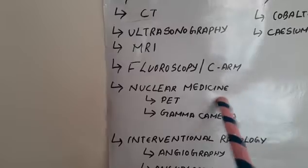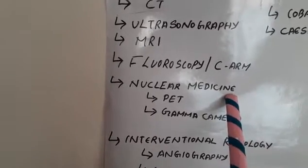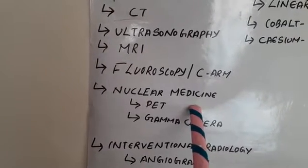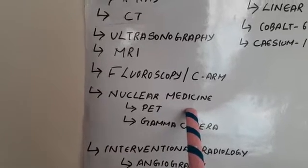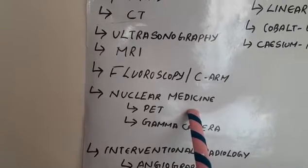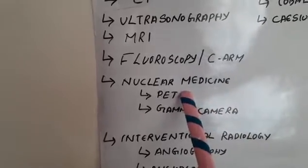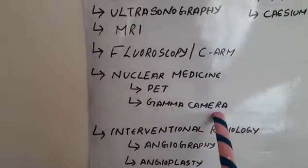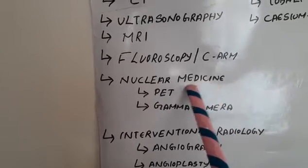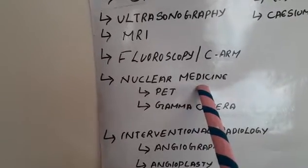Nuclear medicine is a special branch of radio diagnosis where we use radionuclides to diagnose certain disease conditions. Radioactive tracers are administered to examine how the body and organs function, and certain radioisotopes can also be used to treat cancers such as thyroid cancer. The main equipment in nuclear medicine is the PET scanner (positron emission tomography) and the gamma camera.